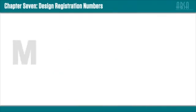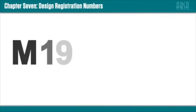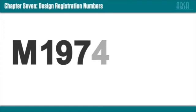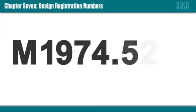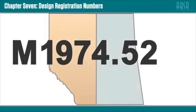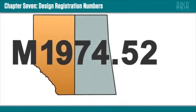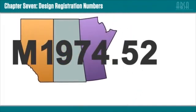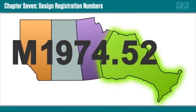For example, M1974.52 indicates that the boiler or pressure vessel design was registered in the province of Ontario, which uses the designator 5, and has been subsequently registered for the province of Alberta.